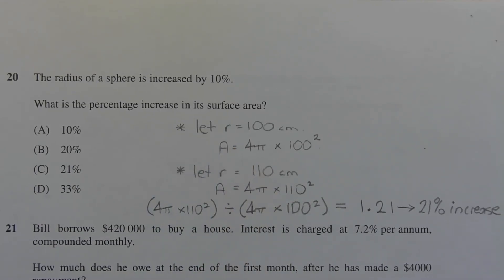Then the surface area of a sphere with radius 100 cm is given by 4 times pi times radius squared, which in this case is 100 squared.